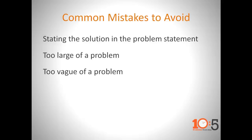The second mistake is too large of a problem statement. For example: 'Breakfast takes too long to prepare.' A better way of saying that is: 'The old toaster takes over five minutes to warm up' — it narrows it down. The third mistake is too vague of a problem statement. 'No one likes the breakfast' is pretty vague. A better way is: 'Guests don't like to get burnt toast.'